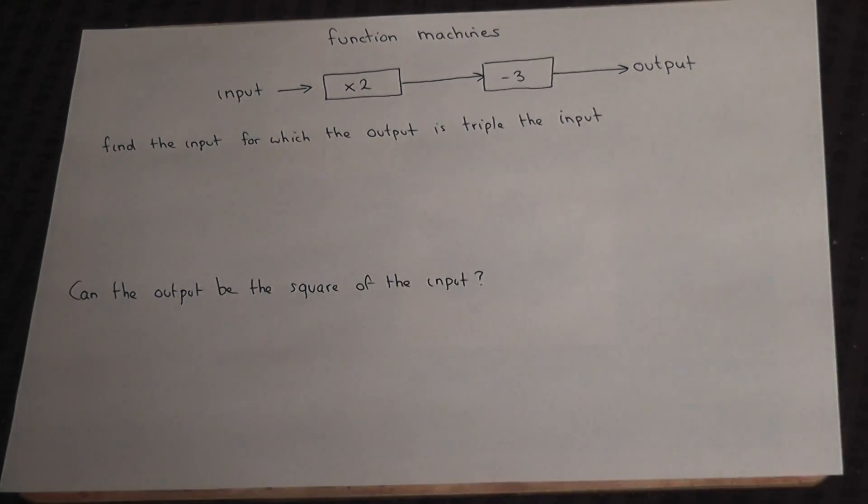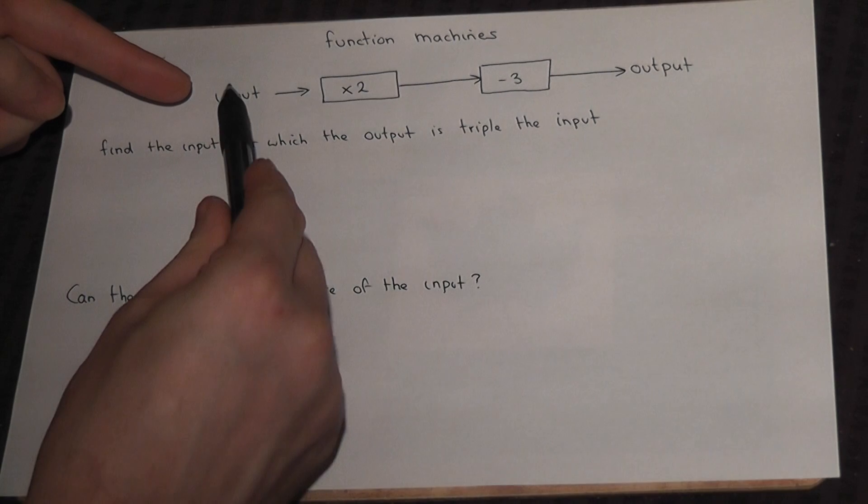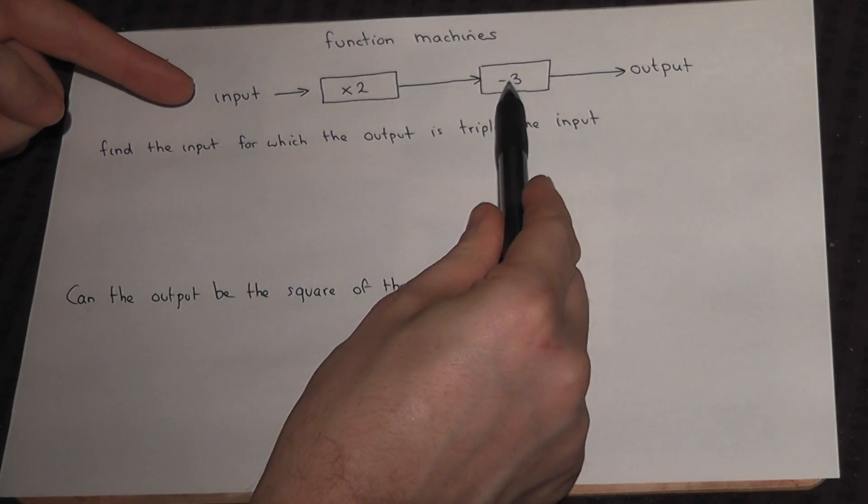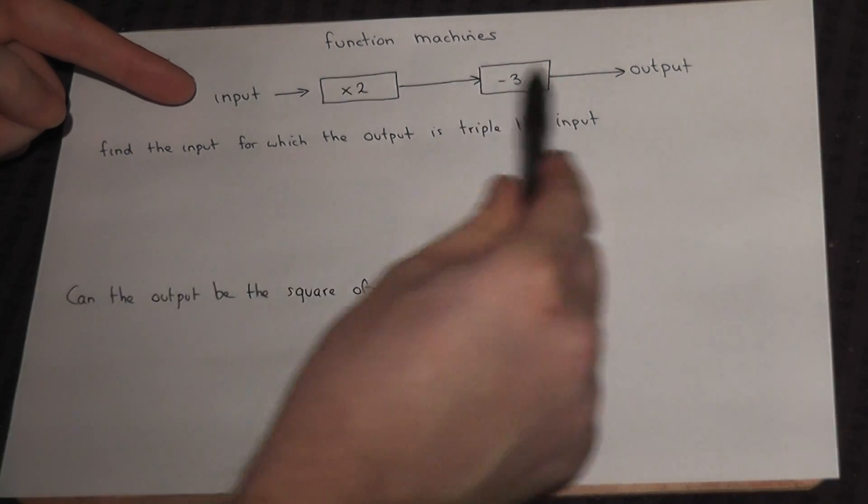This expression tells us that if the input was 2, we double the 2 to get 4, take away 3 to get 1. So if the input's 2, the output is 1.